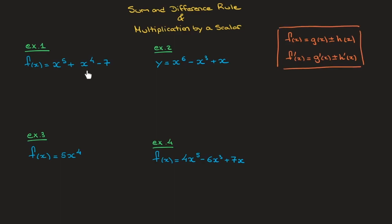So let's look at this first example. We have f of x which equals x to the power of 5 plus x to the power of 4 minus 7. We've seen how to differentiate each of these terms on their own, and so what this sum and difference rule is telling us is that to find the derivative of f of x, all we have to do is differentiate each of these three terms as though they were on their own.